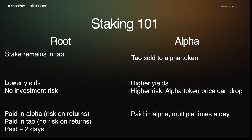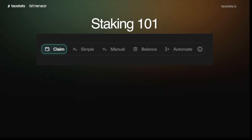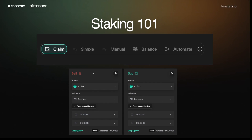As a summary, what are your takeaways? If you want to stake on BitTensor, you can stake on root or you can stake in alpha. If you're on root, your stake remains in TAO — it's a lower yield but there's no investment risk. You can get paid in alpha, which has a little more risk, or paid in TAO, which is no risk on returns. The payout is automatic and auto-compounds about every two days. If you're staking on alpha, you're selling your TAO to an alpha token — that gives you higher yields but also higher risk — and your returns auto-compound in alpha multiple times a day. On the TAO stats dashboard, you can choose your claim and stake in a bunch of different ways.